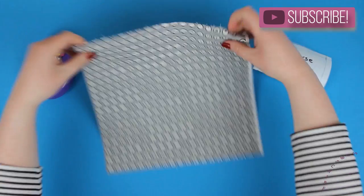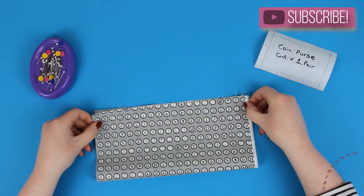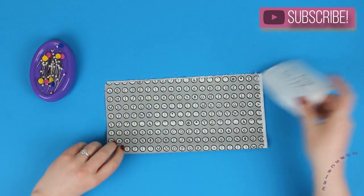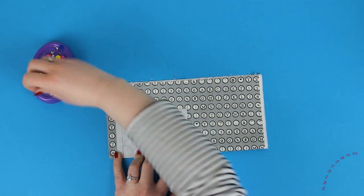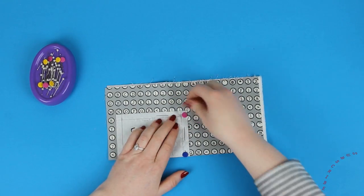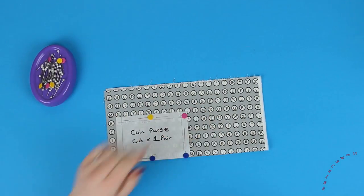Taking your chosen fabric fold it over, and then you're going to pin your pattern to the fabric making sure that the bottom of the pattern is at the fold of your fabric. Once you're done go ahead and cut it out.